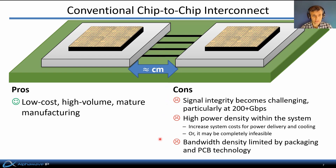In some situations, conventional packaging and PCB technology limits the bandwidth density of the IO — that is, the number of gigabits per second that can be communicated per unit area on the chips or board — unacceptably.